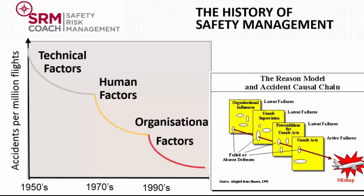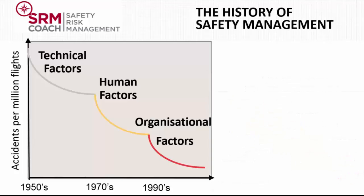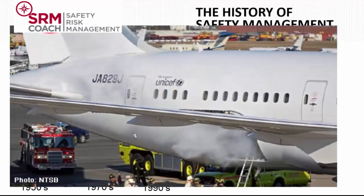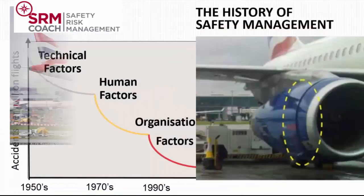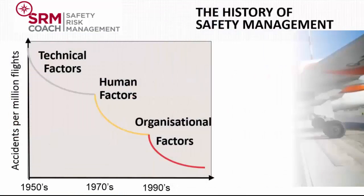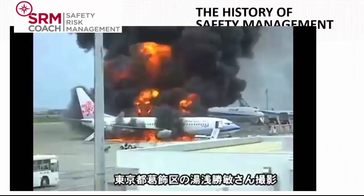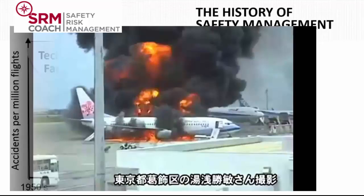Although over time we shifted focus between different areas, we can't assume that the previous areas are fixed. We are still dealing with technological factors that contribute to safety events. Take for instance the 787 and its battery fire incidents. Human error and human factors are still relevant, as well as organizational factors. So modern safety management has to encapsulate all of the above to ensure that we keep improving our accident rate.